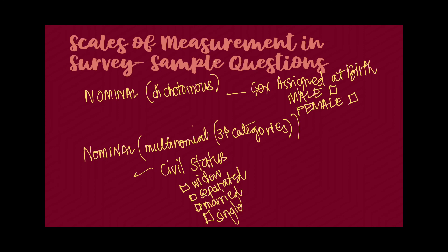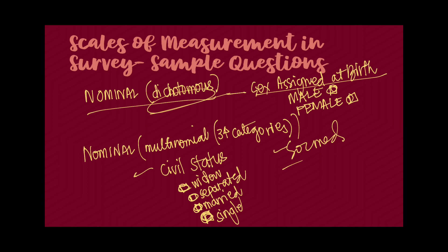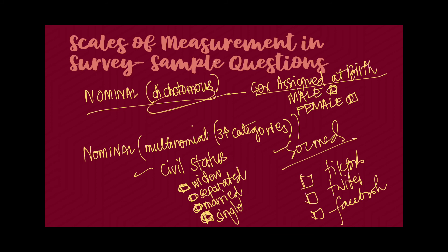How do scales of measurement look in a survey? For nominal dichotomous, it looks like a checklist for sex assigned at birth with two choices: male or female. For multinomial — three or more categories — an example would be a forced-choice checklist for civil status: widowed, separated, married, or single. Another example is a multi-checklist for social media usage: Facebook, Twitter, TikTok, etc. These are examples of nominal — categories with no specific ranks.